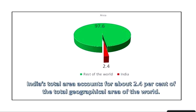Comparing with the world area, India accounts for only 2.4 percent of the total geographical area of the world. From this diagram, this is the entire land mass available for the world, and India has only 2.4 percent of that. Whereas if we compare about the population, India accounts for more than 17 percent of the world population at present.